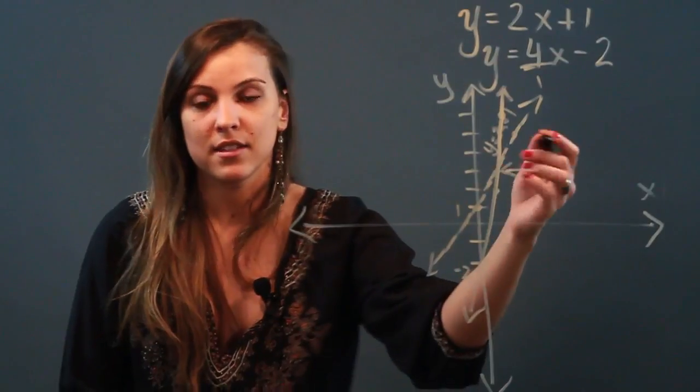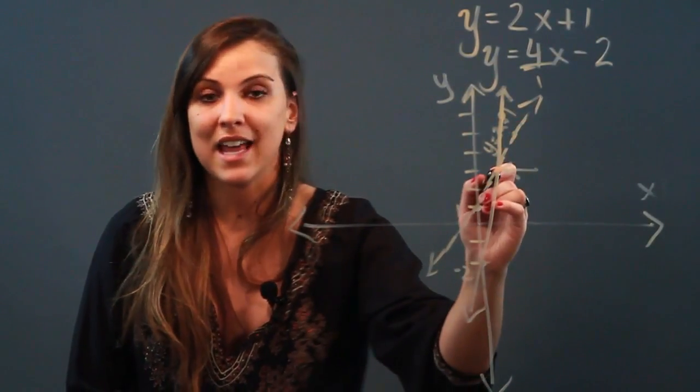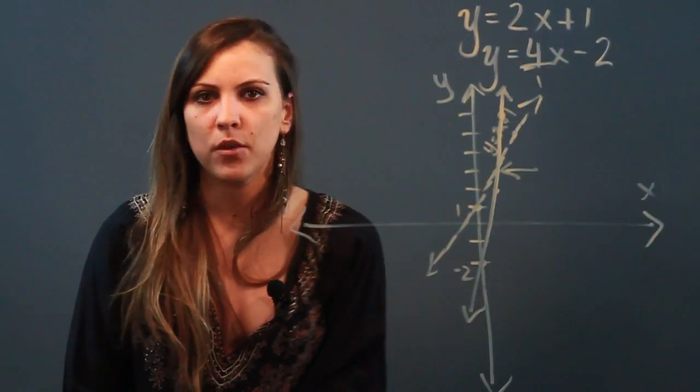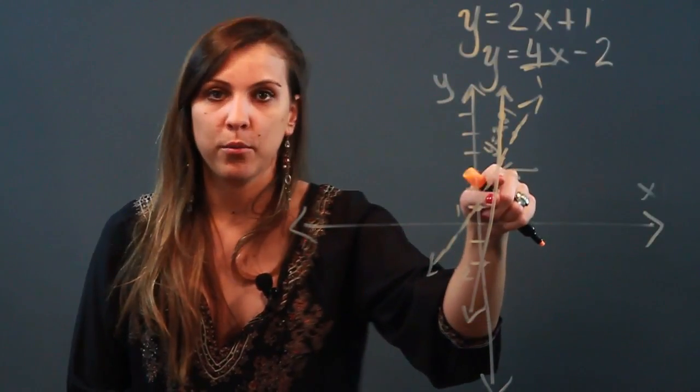And that is the solution of the system of equations. So when you have graph paper and you can tell exactly what point that is, that would be your solution. So you solve the system of equations by graphing, by graphing each line separately, looking for their point of intersection.